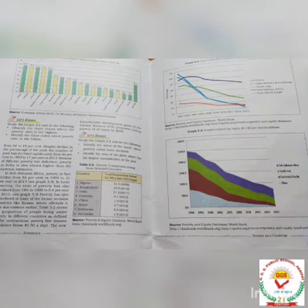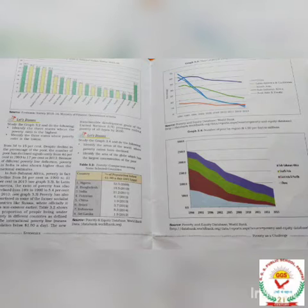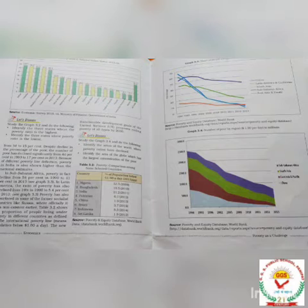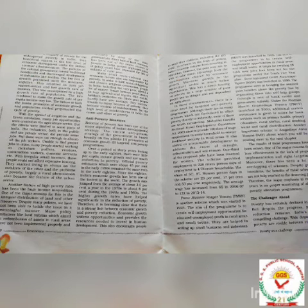Economic Growth and Poverty Reduction Interconnection: The economic growth up to the early 1980s and 1990s and the level of poverty is direct evidence of the connection between economic growth and poverty reduction. Rapid economic growth works through two channels. First, it creates well-paid jobs and raises real wages, which raises the income of poor households, thereby directly reducing poverty.